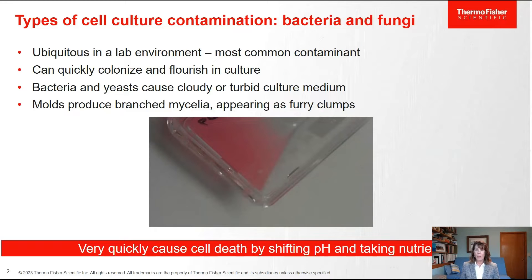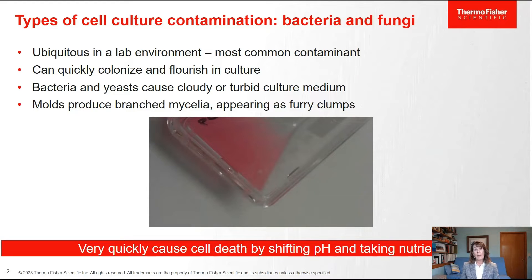When you get a cell culture contamination with bacteria and yeast, they cause your growth medium to become cloudy or turbid, so you know pretty much as soon as you pick up that culture dish that you've got a contamination. If you have a contamination with molds, you can see them floating around — they look like furry clumps, kind of like little tumbleweeds. Bacteria and fungi make your culture really acidic, take up all the nutrients, leaving nothing left for your cultured cells.